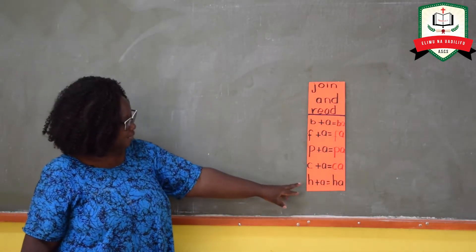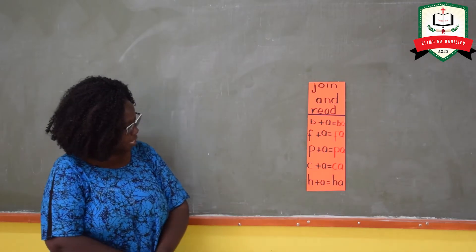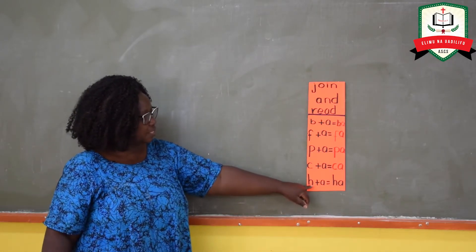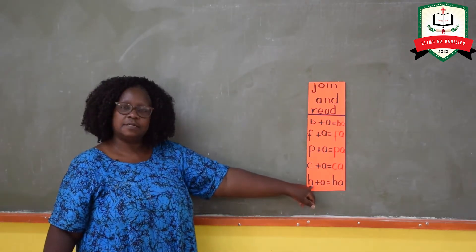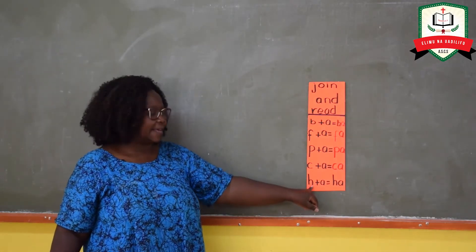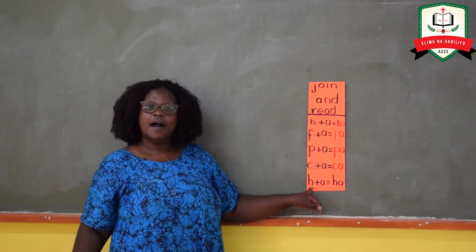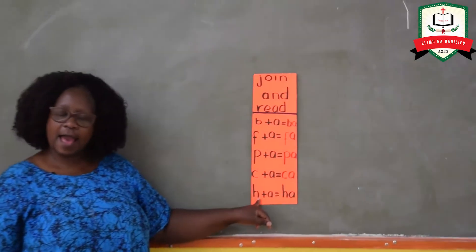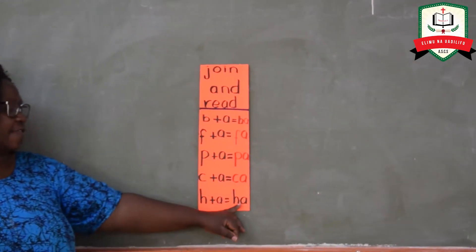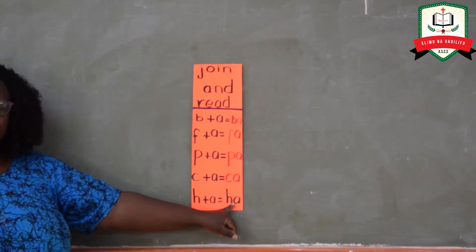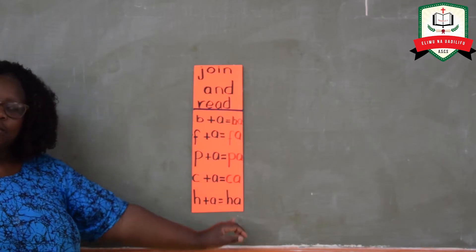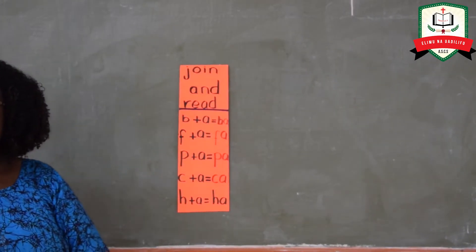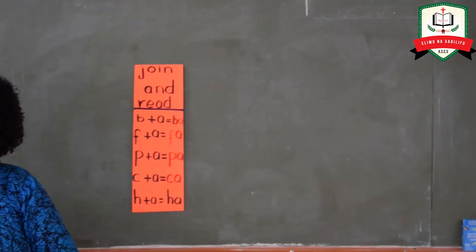Now let's look at the last one. We have a sound — who can read for me this sound? Ha. Again, ha. So we take sound ha and a together. Which one do we get? We get ha. Everybody, ha.